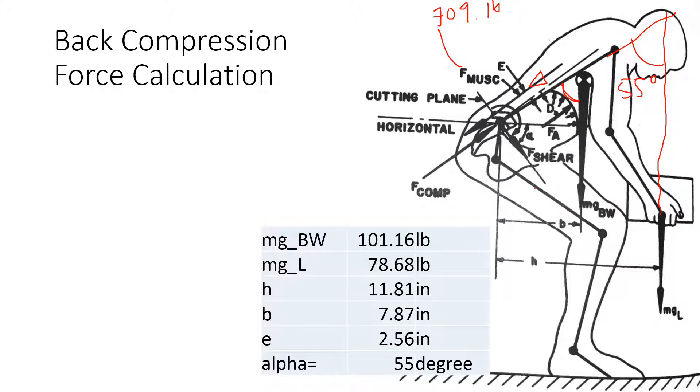We have this load from the erector spinae, also a component of the load in this direction which will be mg, that load times cosine 55 degrees, and also this mg which is the load body weight.